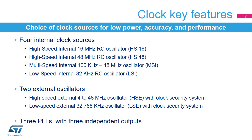STM32L5 devices embed two oscillators for use with an external crystal or resonator: a high-speed external 4 to 48 MHz oscillator, or HSE, with a clock security system; and a low-speed external 32.768 kHz oscillator, or LSE, also with a clock security system. When enabled, the clock security system can detect failures on external clock sources and automatically switch to an internal oscillator — HSI16 or MSI in case of HSE failure, and LSI in case of LSE failure. If a failure is detected on the HSE clock, a clock failure event is sent to the break input of the advanced control timers, and a non-maskable interrupt is generated to inform the software about the failure.